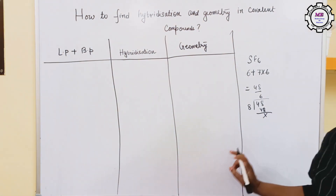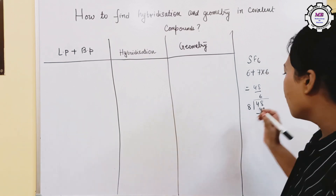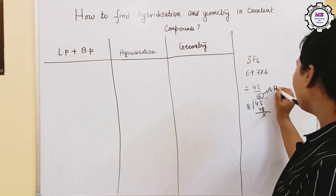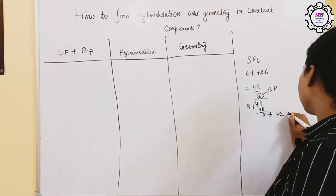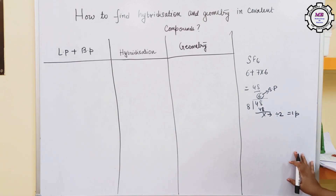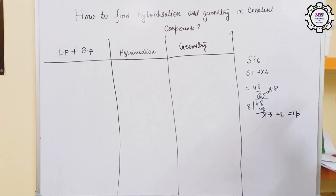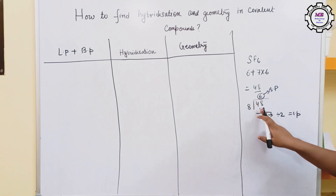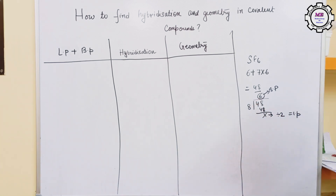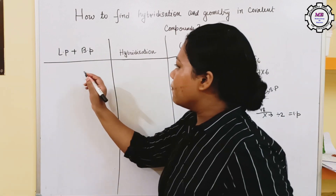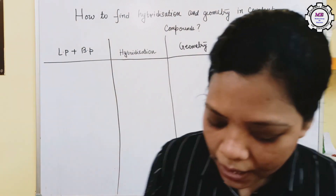If there is a remainder, you divide it by 2. Whatever comes from the quotient is your bond pair, and whatever comes after dividing the remainder by 2 is your lone pair. For SF6, it comes as only 6 as bond pair. So if 6 is the bond pair, what will be the hybridization and geometry? We will see that using the LP plus BP chart.